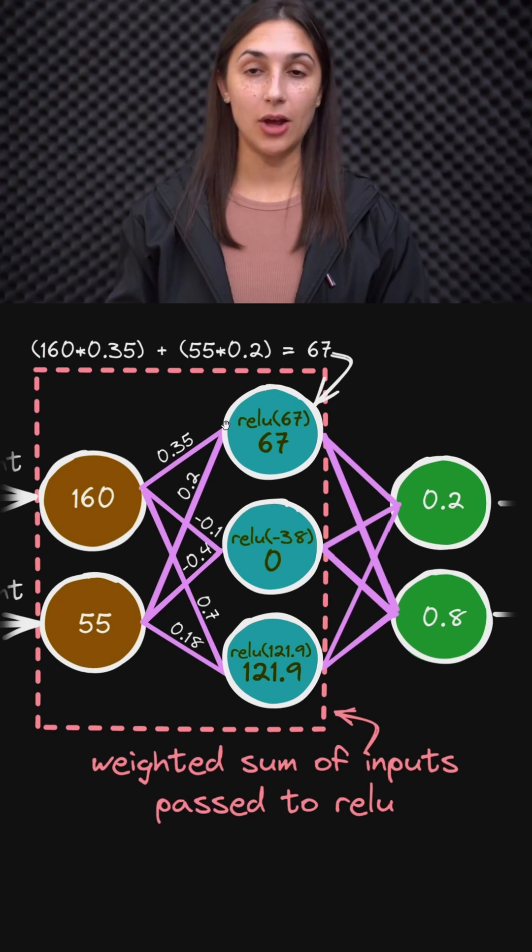Focusing on this top node here, we're taking the weighted sum of its inputs. We're multiplying 160 by 0.35 and adding that to 55 times 0.2. We've written that up here - the weighted sum of inputs equals 67 for this node.